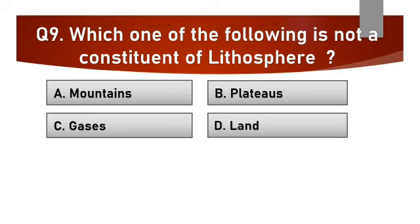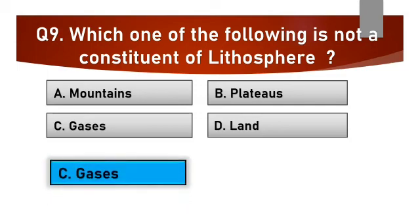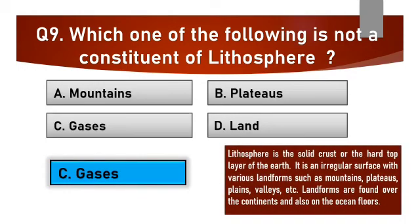The answer is C: Gases. Lithosphere is the solid crust or the hard top layer of the earth. It is an irregular surface with various landforms such as mountains, plateaus, plains, valleys, etc. Landforms are found over the continents and also on the ocean floors.